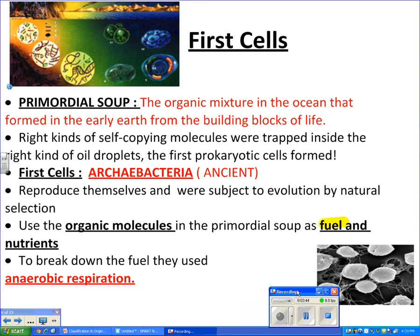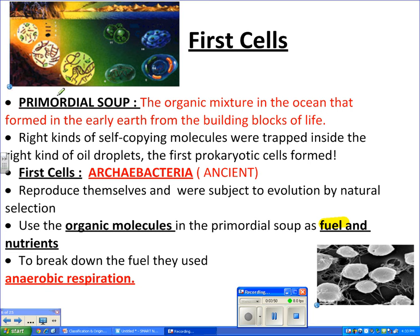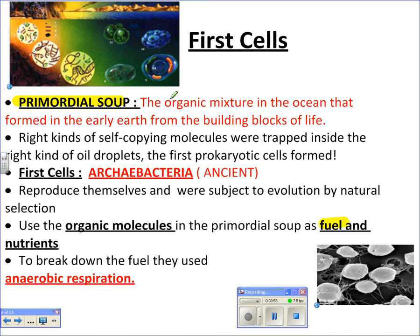So now we have evidence that organic molecules were present. We call this the primordial soup — the organic mixture in the ocean that formed in the early Earth from the building blocks of life. What we think happened is that the right kinds of self-copying molecules got next to the right kind of oil droplets, and we got the first prokaryotic cells. These first cells, we think, were the archaebacteria, the ancient bacteria. The reason we think it's the ancient bacteria is because archaebacteria live in extreme environments just like the early Earth, and they even perform chemosynthesis, using toxins like methane for fuel.